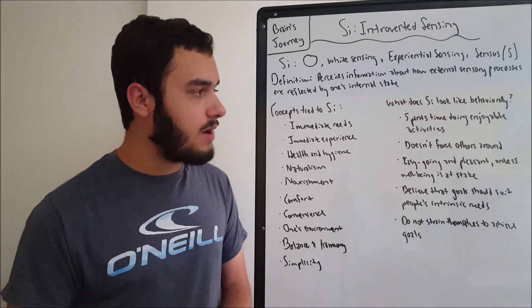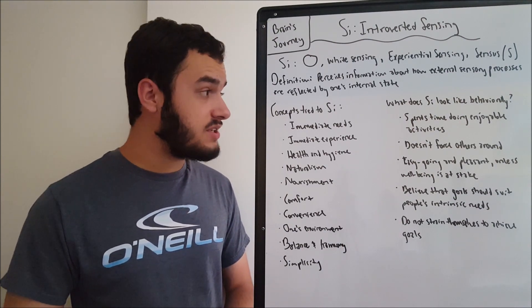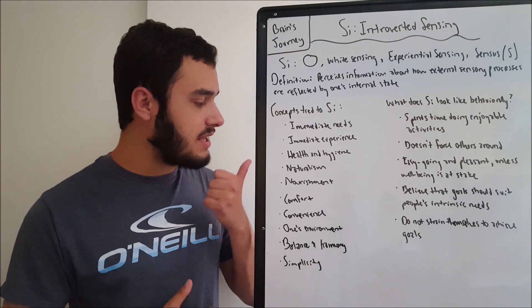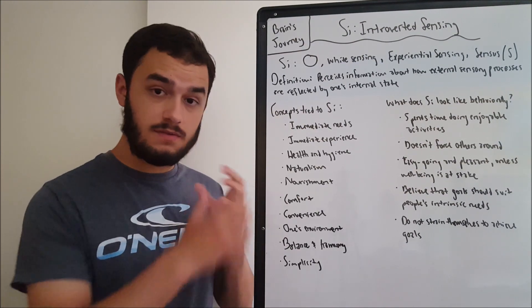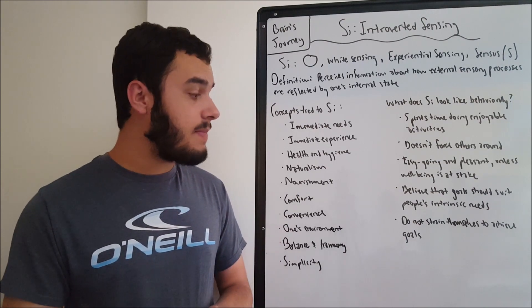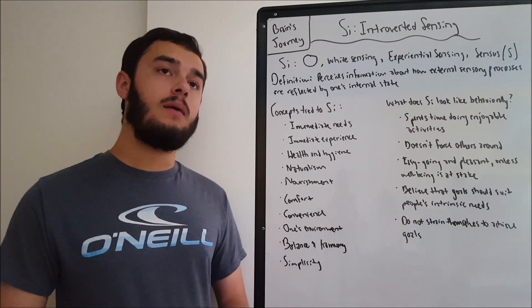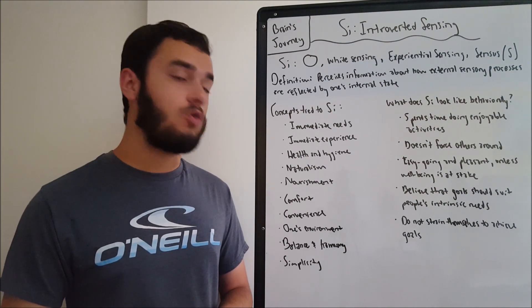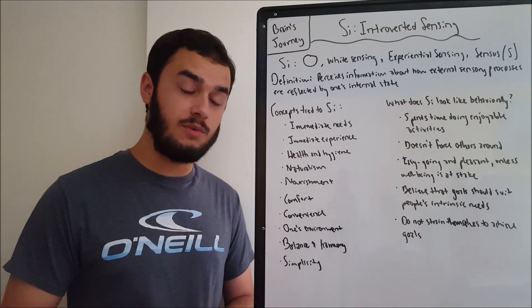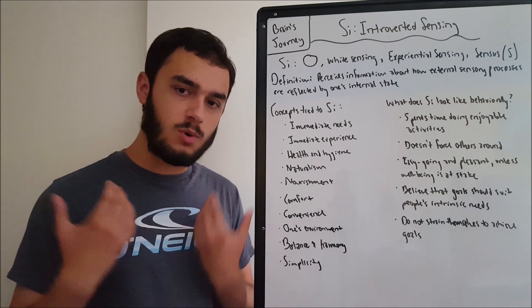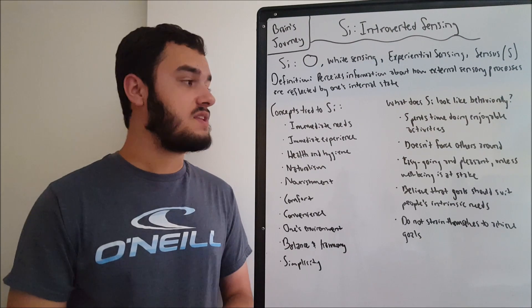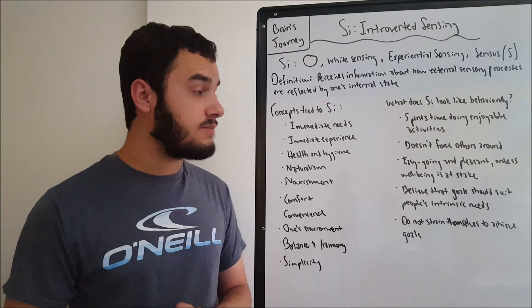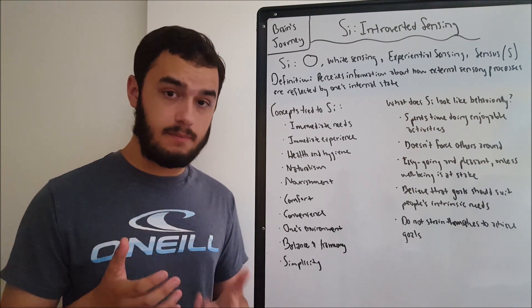So what does it look like behaviorally? Well, a lot of SI valuing types spend time doing enjoyable activities. Because of this immediate needs and health and hygiene, comfort, all this stuff, they tend not to spend too much time overachieving, working, doing things that require strenuous physical effort, because that's more correlated with SE. No, they'll spend more time doing things that are enjoyable for themselves, things that they want to pursue, a hobby maybe. Hobbies are related to SI. Something that takes up your time, things like that.